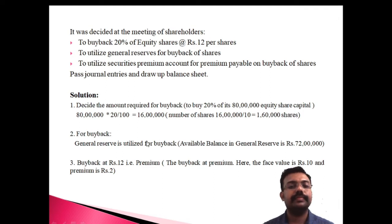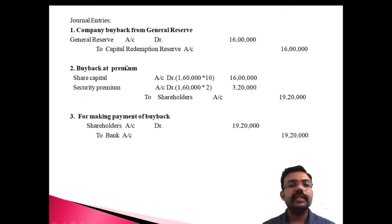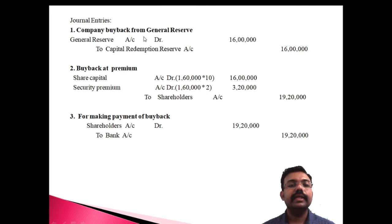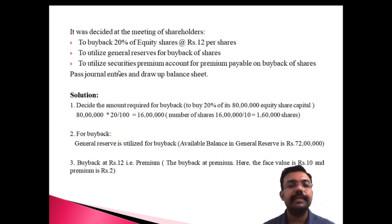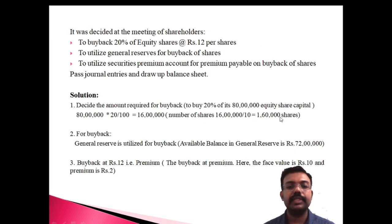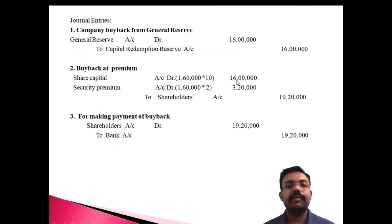We are using general reserve for the purpose of buyback, so the entry is: general reserve account to capital redemption reserve — amount 16 lakh. Then buyback at a premium: the number of shares is 1 lakh 60,000; face value 10 rupees and premium 2 rupees. So the equity share capital portion is 1 lakh 60,000 × 10 = 16 lakh, and premium portion is 1 lakh 60,000 × 2 = 3 lakh 20,000.